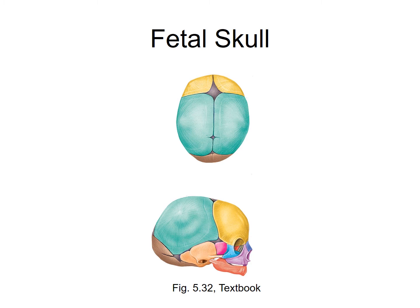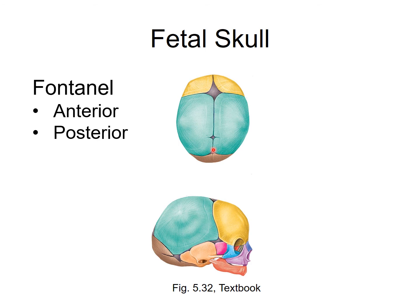We'll complete our discussion of the skull by looking at the fetal skull and identifying a couple of structures found on it. There is no image in your lab manual — refer to your textbook, currently figure 5.32. When you were born, all of your cranial bones were not fused together; they had spaces between them covered by a thick membrane called fontanelles — you know them as soft spots. There are two fontanelles to identify: the anterior fontanelle and the posterior fontanelle.